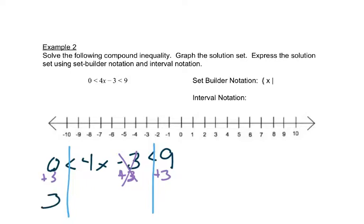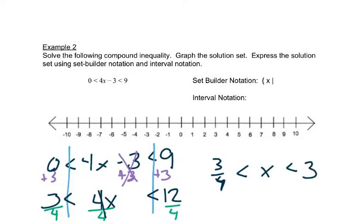So it gives us 3 here, 4x here, and 12 here. And then we'll divide each piece by 4. It's a positive 4, so the signs do not change. And that would give us 3 fourths is less than x is less than 3.